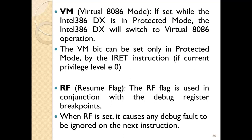Virtual mode — the VM 386 mode: if the VM bit is set while the Intel 386 DX is in protected mode, the Intel 386 DX will switch to the virtual 8086 mode. The virtual mode bit can be set only in protected mode by the IRET instruction. The resume flag RF, used in conjunction with the debug register breakpoint, when RF is set, causes the debug fault to be ignored on the next instruction.